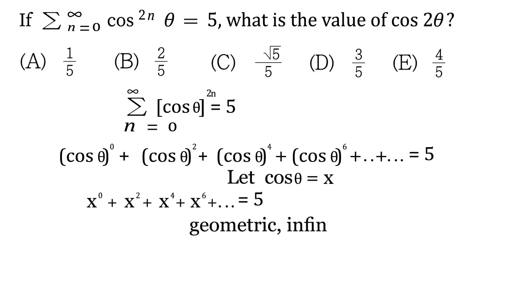Which is a over 1 minus r. a is the first term, and r is basically the common ratio. So how do you get the common ratio? Well, you just take the second term and divide it by the first term, or you can take the third term and divide it by the second term, like that.